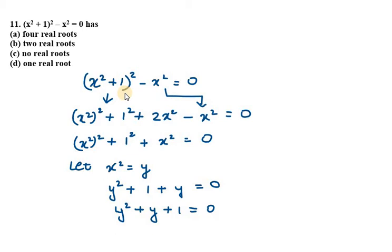Now we will find the discriminant of this equation. We know that it is b square minus 4ac. b in this case is 1, so 1 squared minus 4ac. a in this case is 1, c in this case is 1. We have 1 minus 4, which is minus 3.